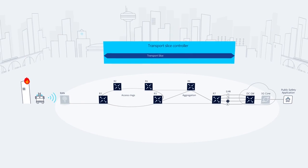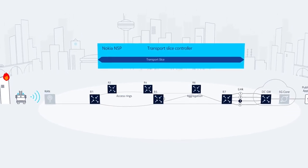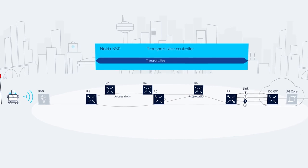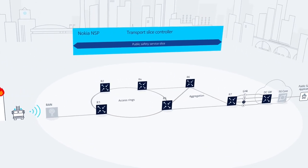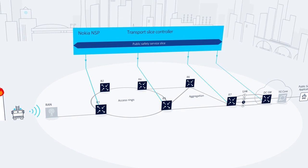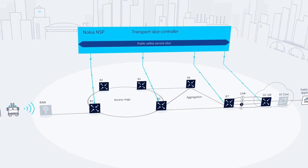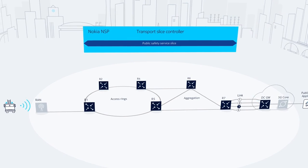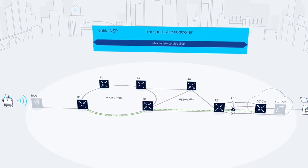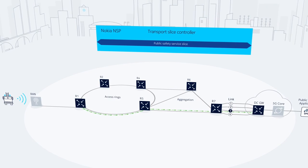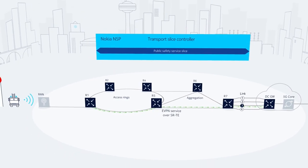Focusing on the IP routing transport domain, the Nokia Network Services Platform — a software-defined networking platform — uses its transport slice controller function to set up connectivity for the public safety transport slice between the RAN and the CORE endpoints. It does this by setting up services, tunnels, and paths using, for example, EVPN over traffic-engineered segment routing tunnels.